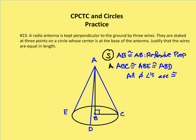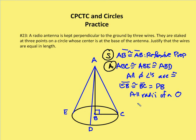And then I know that EB is congruent to BC, is congruent to segment DB. And the reason for that is because all radii of a circle are congruent.